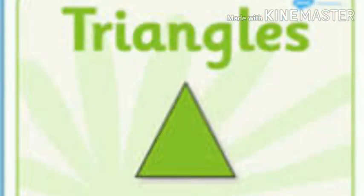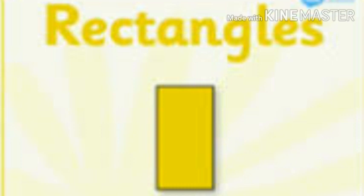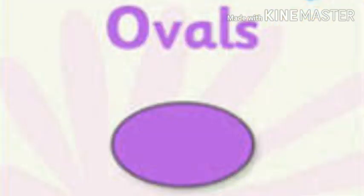It has four equal sides. This is a triangle — it has three sides. This is a rectangle. Opposite sides of a rectangle are equal. This is an oval — it looks like an egg.